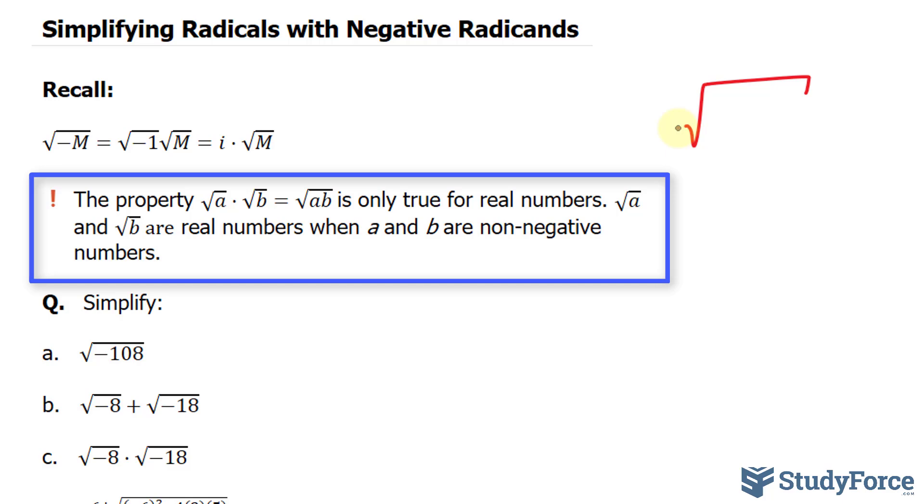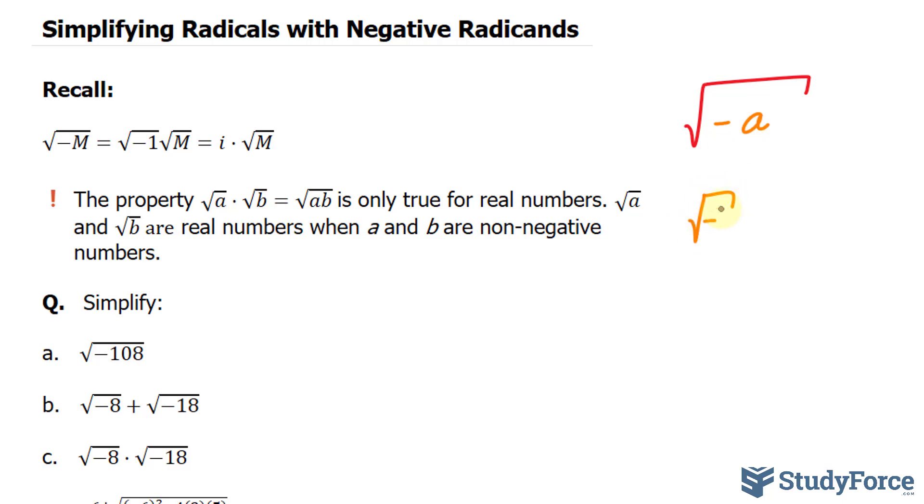Also keep in mind that when it comes to negative radicands, the property, the square root of a times the square root of b is equal to the square root of a times b, is only true for real numbers. So you can't do this if a and b are negative. Instead, you have to separate the negative part as the square root of negative 1 times the square root of a and switch that to the letter i. And only then can you use this property.